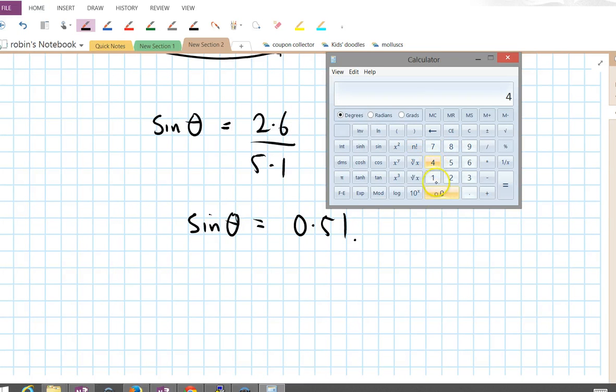I'm going to guess that theta is 40 degrees. Take the sine of it. That's 0.64, that's too big. So 40 is too big. Let's try 20. We're looking for 0.51. 0.34, that's too small. So 20 is too small.